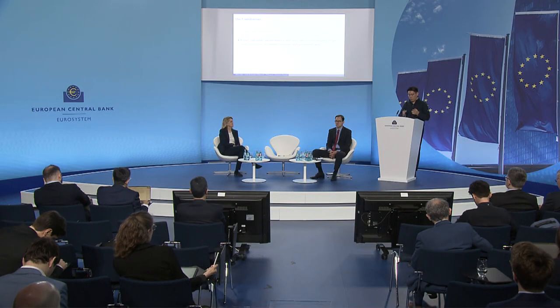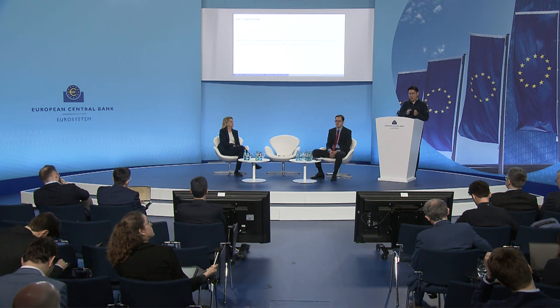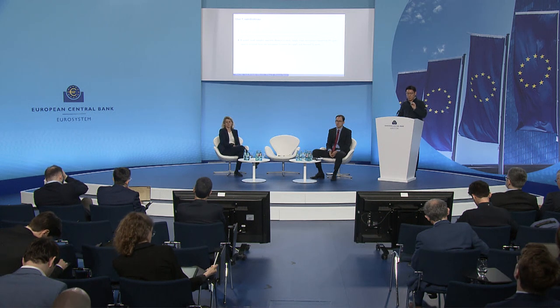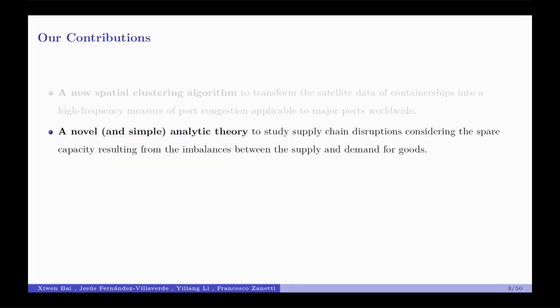What we get from this is an index of global supply chain disruptions directly usable in time series analysis, for example using SVARs or local projections. The second contribution is using an SVAR framework with sign and zero restrictions. To use sign restrictions, we need a theoretical foundation — for example, to separate the causal effects of a demand shock from a supply chain disruption shock, we impose a positive sign on unemployment. We develop a novel and simple theory to rationalize how we impose sign restrictions on macro aggregates in response to each of the three shocks.